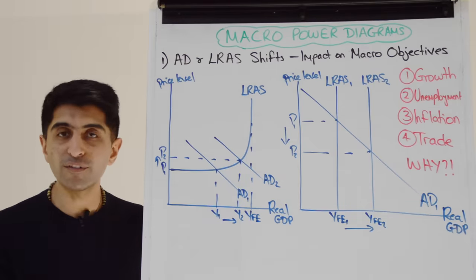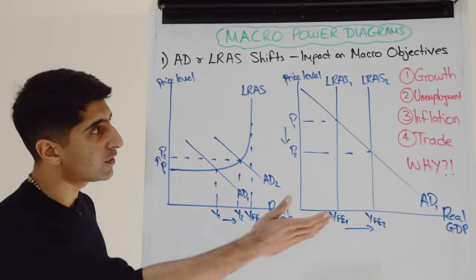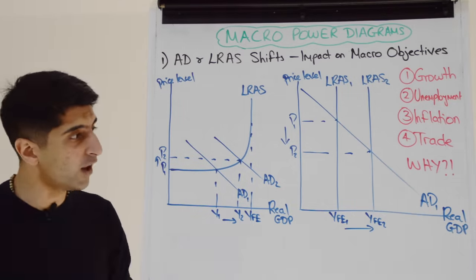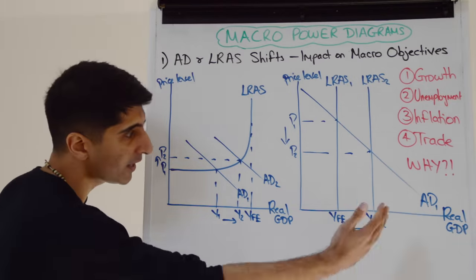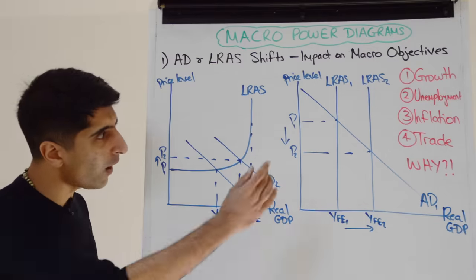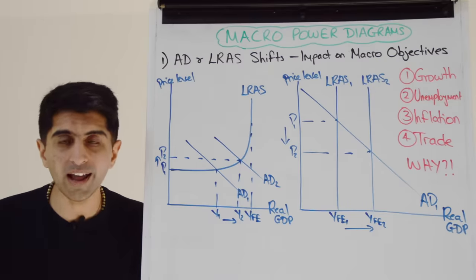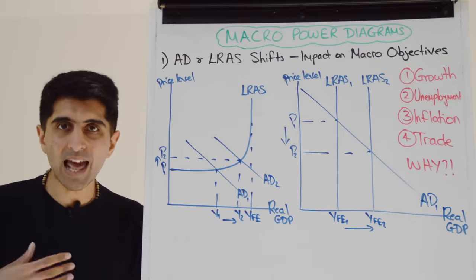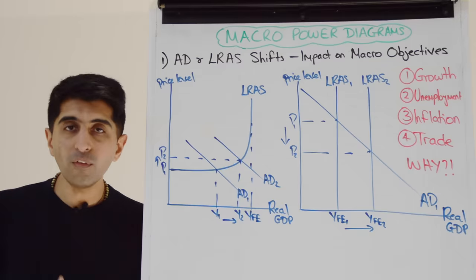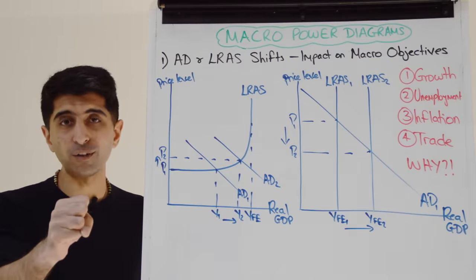Same for a reverse AD shift left — know why we see changes in these macro objectives. Same for an LRAS shift right — why do we see the increase in growth, the reduction in unemployment, the reduction in cost-push inflation? Why, why, why for all your shifts of AD and LRAS. Know the impact on the macro objectives and why. That will really impress your examiner and boost both your analysis and evaluation marks.